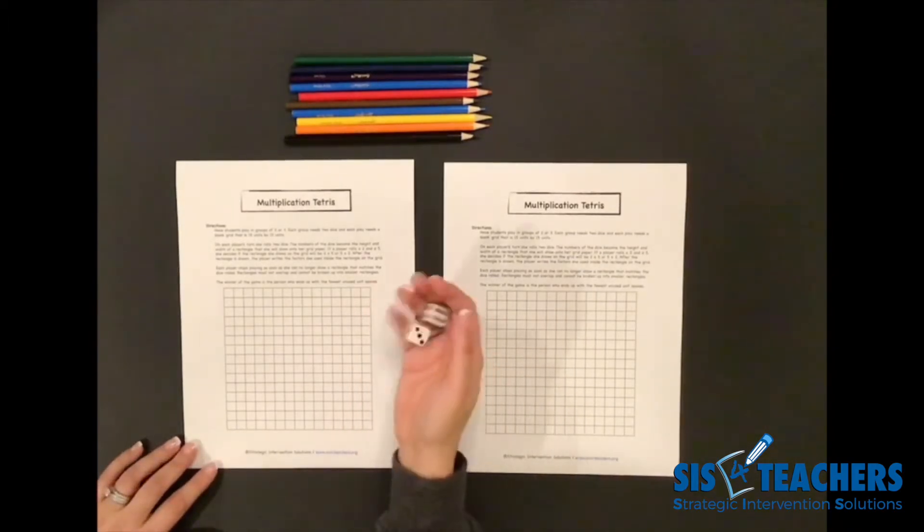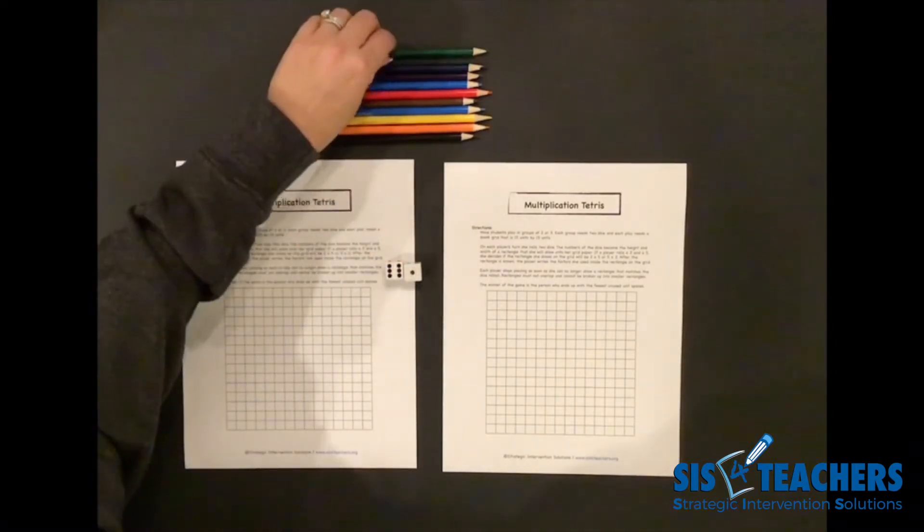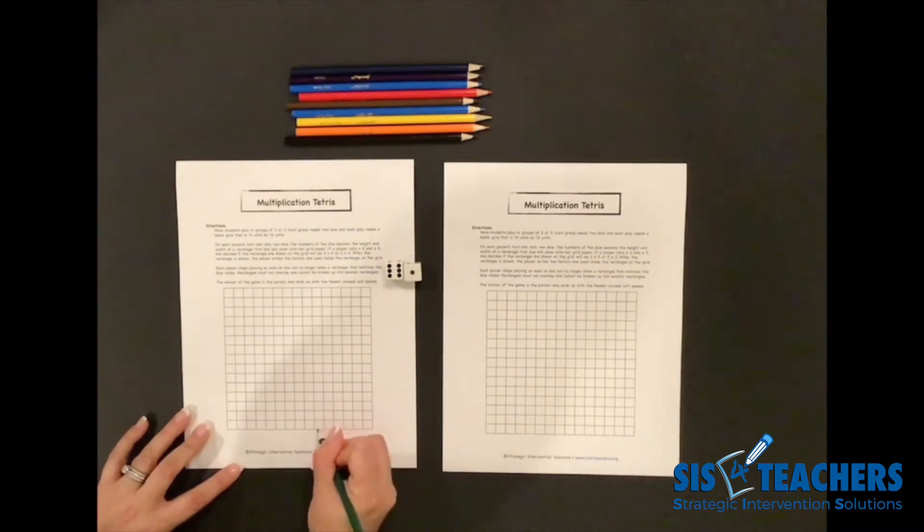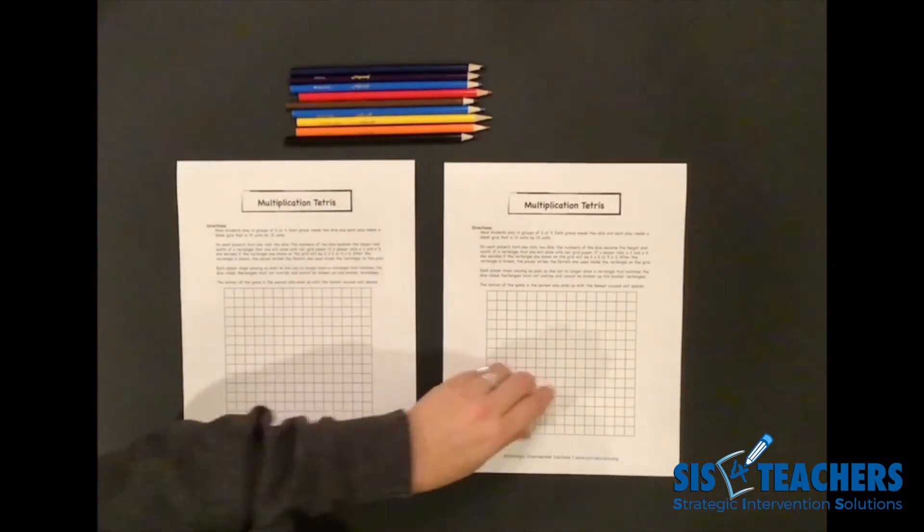So I'm going to start off playing with mine. I have a six by one or a one by six. I'm going to go ahead and I think I'm going to start this row down here where I'm going to do one row of six. So I'm going to kind of outline my six boxes. Inside of mine, I'm going to put that I did a one row by six, which equals six. So I'm going to shade in my area for my one by six. My partner is going to get to go.